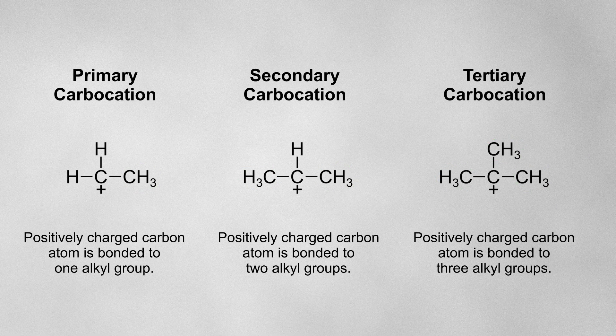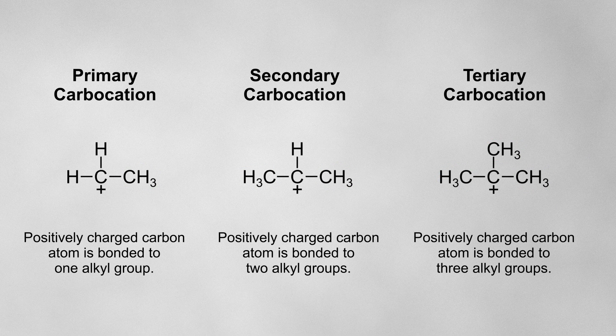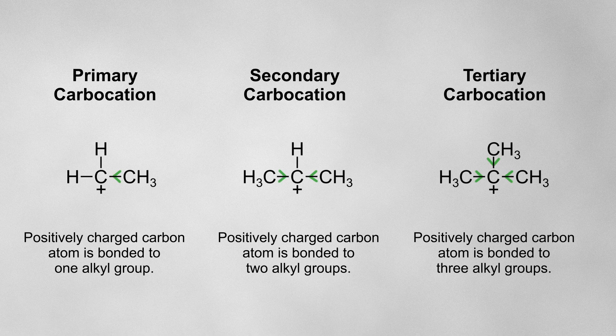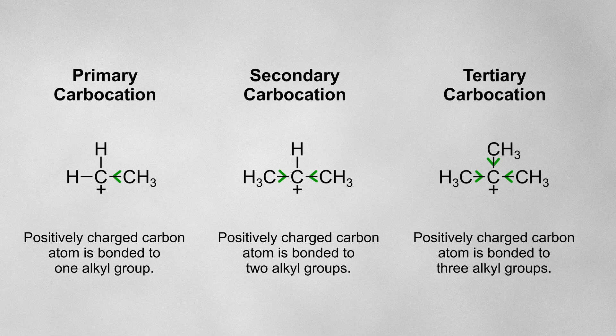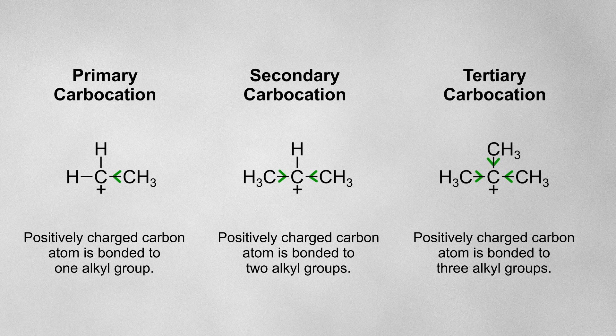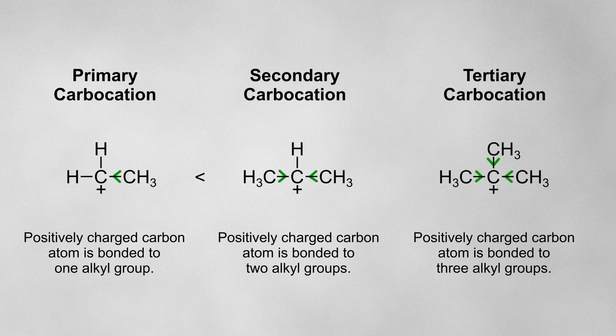Alkyl groups are electron donating, meaning they'll push electrons towards the positively charged carbon atom. The more alkyl groups there are, the more electrons are being pushed and therefore the more the positive charge is stabilised. So primary carbocations are the least stable, followed by secondary carbocations and then tertiary carbocations are the most stable.